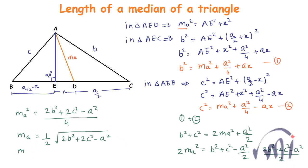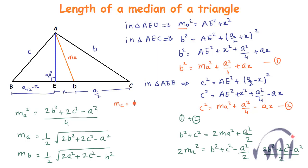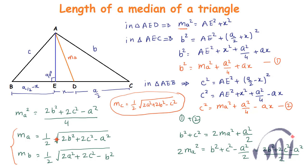Similarly, the formula for the length of the median from vertex B is Mb equals half of the square root of 2a² plus 2c² minus b², and the length of the median from vertex C is Mc equals half of the square root of 2a² plus 2b² minus c². These three are the formulas for the lengths of medians from vertices A, B, and C.